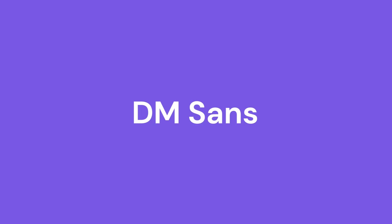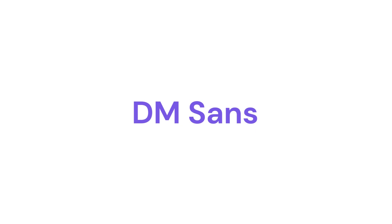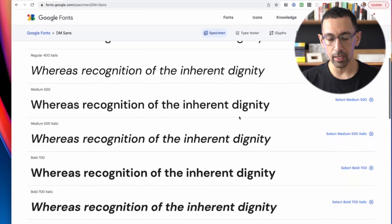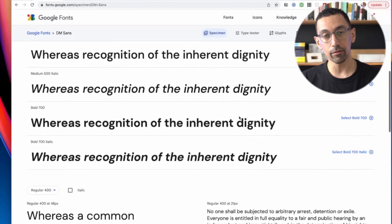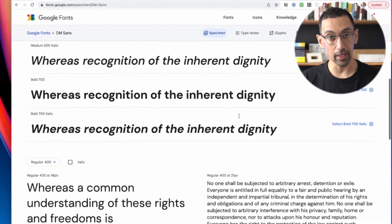Alright, so we're going to start with one of my favorites: DM Sans. DM Sans is a very contemporary font that has a lot you can do with it and is really good for just reading. It makes it really nice for reading text on a page with a modern feel. So if you're going to have a blog, this is a great body font for your blog.